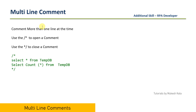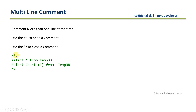Coming back to the presentation: the other kind of comment is called the multi-line comment. As the name suggests, it is used to comment multiple lines in a SQL statement. It won't always be necessary to comment only a single line — sometimes you might have a requirement to comment multiple lines or multiple statements at once. The syntax is: forward slash followed by an asterisk (/*) to open, and asterisk followed by forward slash (*/) to close.